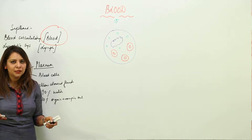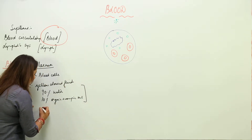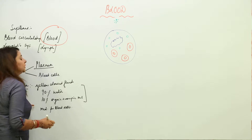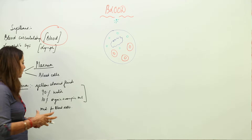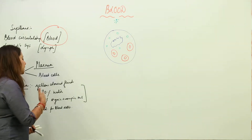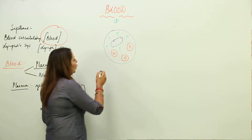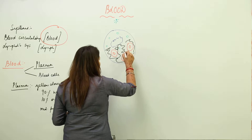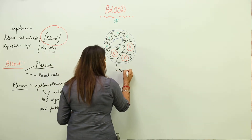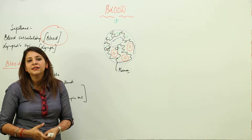Because plasma contains these substances, it acts as a medium for blood cells. Blood cells remain scattered in the plasma, and they remain alive because plasma serves as a medium. So plasma is very important for blood cells to survive. Plasma is a yellow colored fluid which is 90% water and 10% other substances, acting as a medium for blood cells.